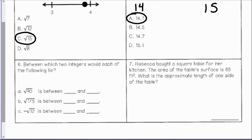Number 6: between which two integers would each of the following lie? The square root of 90 is between 81 and 100, which is 9 and 10. The square root of 175 is between 169 and 196, which is 13 and 14.